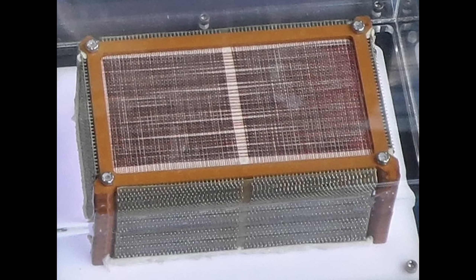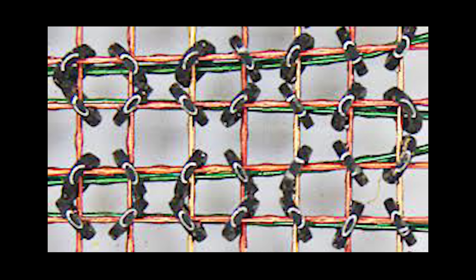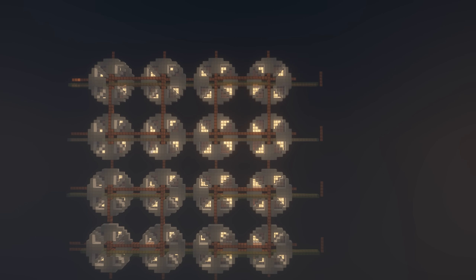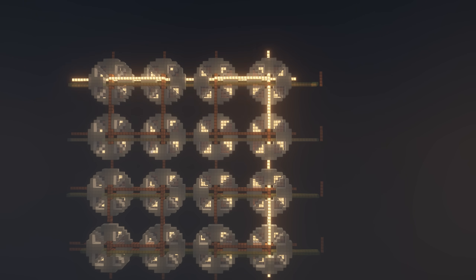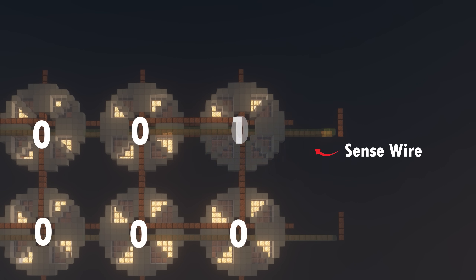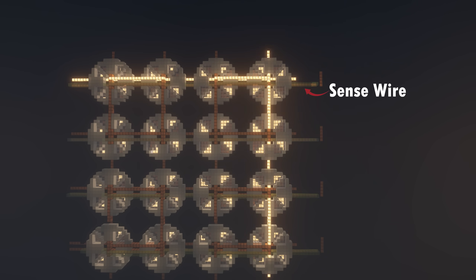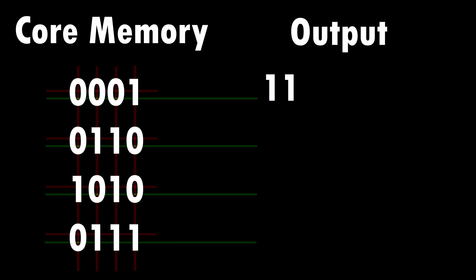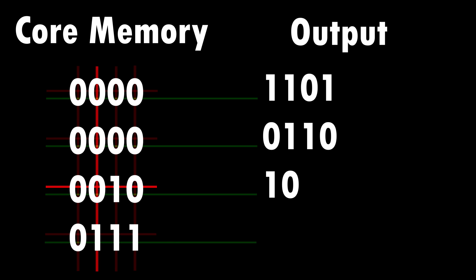The Saturn V used core memory. It was built from tiny ferrite rings called cores, storing one bit in each core by magnetizing the core either clockwise or counterclockwise. A core was magnetized by sending a pulse of current through the wires threaded to the core, and the magnetization could be reversed by sending a pulse in the opposite direction. To read the value of a core, a pulse flipped the core to the zero state. If the core was in a one state previously, the changing magnetic field created a voltage in a sense wire threaded to the cores. But if the core was already in the zero state, the magnetic field wouldn't change and the sense wire wouldn't pick up a value. Thus, the value of the bit was read by resetting the core to zero and testing the sense wire. An important characteristic of core memory was that the process of reading a core destroyed its value, so it needed to be rewritten.